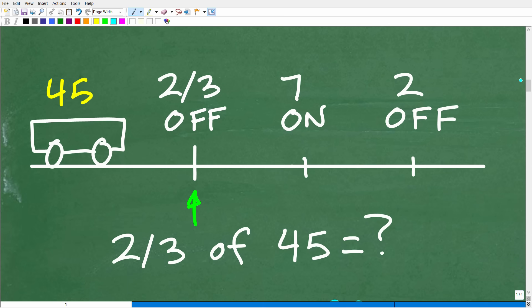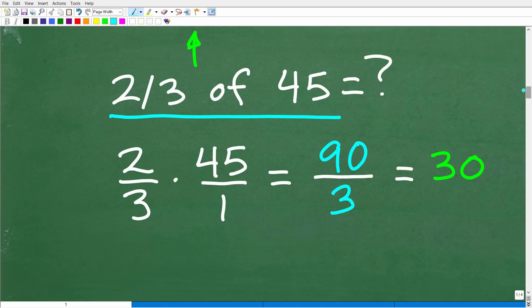Okay, so here we have our bus with 45 people that are on it. The first thing we need to understand is two-thirds of these folks are going to get off the bus. Okay, so how many people is that? Well, we're going to have to figure out this basic math question right here. What is two-thirds of 45? Well, to get the answer to that question, what we have to do is simply multiply two-thirds by 45.